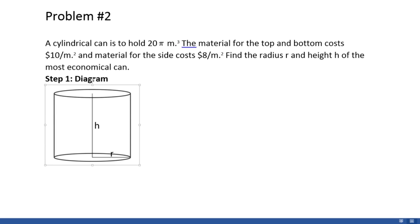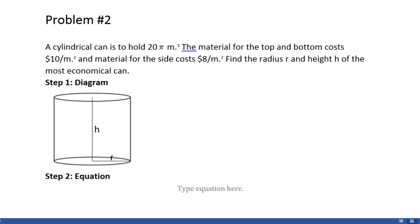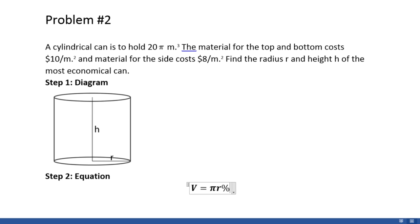As in the previous example, we start off with step 1, making a diagram so we can visualize the scenario. As you can see in the diagram, we have a cylinder with a height of h and a radius r. Just like we did in the first problem, our second step is going to be to find an equation for the geometric solid we're working with. Since we're working with a cylinder, we'll use the equation for the volume of a cylinder: V = πr²h.